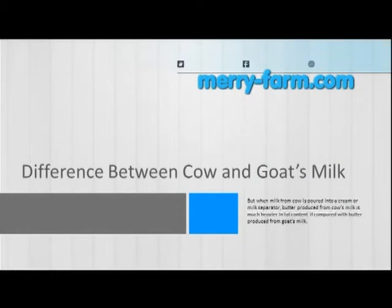But when milk from a cow is poured into a cream or milk separator, the butter produced from cow's milk is much heavier in fat content compared with butter produced from goat's milk.